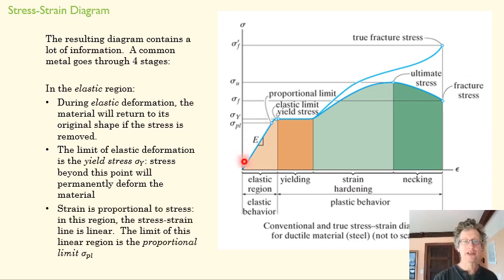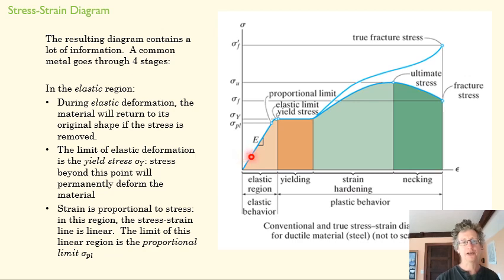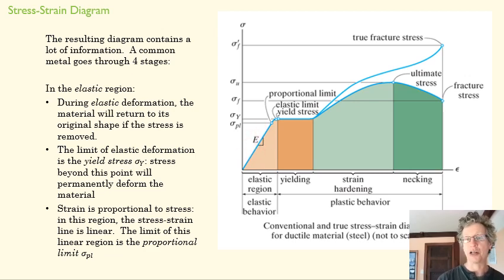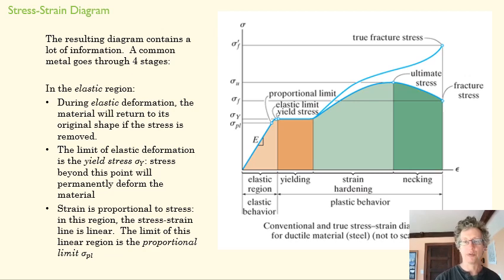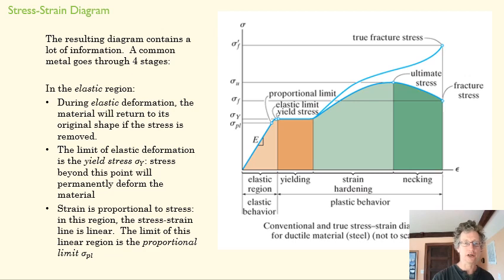This elastic region is also sometimes called the proportional region, because stress is proportional to strain. As you move along this line — it's a linear line — if I increase my load by a certain amount, it's always going to increase the strain by the same amount. That's why we call this the proportional region. The slope of that line is called the modulus of elasticity, E, which is going to be a really important value when we start dealing with materials. Just remember: elastic means rubber band — it's going to spring back to where it was before.